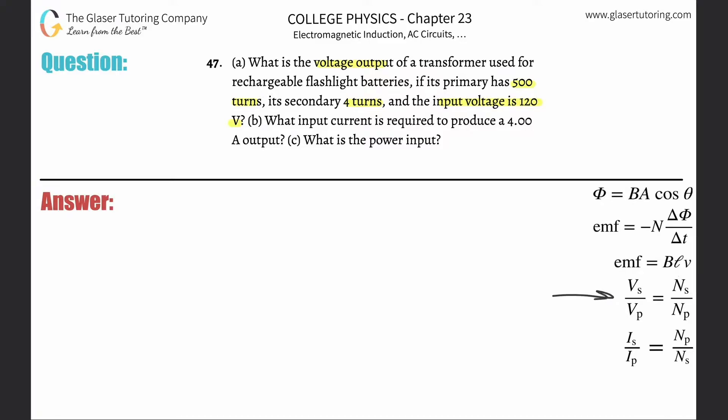All right, so transformer problem, we're going to use this formula over here on the right-hand side. It says that the voltage in the secondary divided by the voltage in the primary should be equal to the number of turns in the secondary divided by the number of turns in the primary. So what are they asking us to solve for? They are asking us to solve for, it says, what is the voltage output? Output means secondary. So we are asked to solve for this. That means I got to know all the other three variables, right?